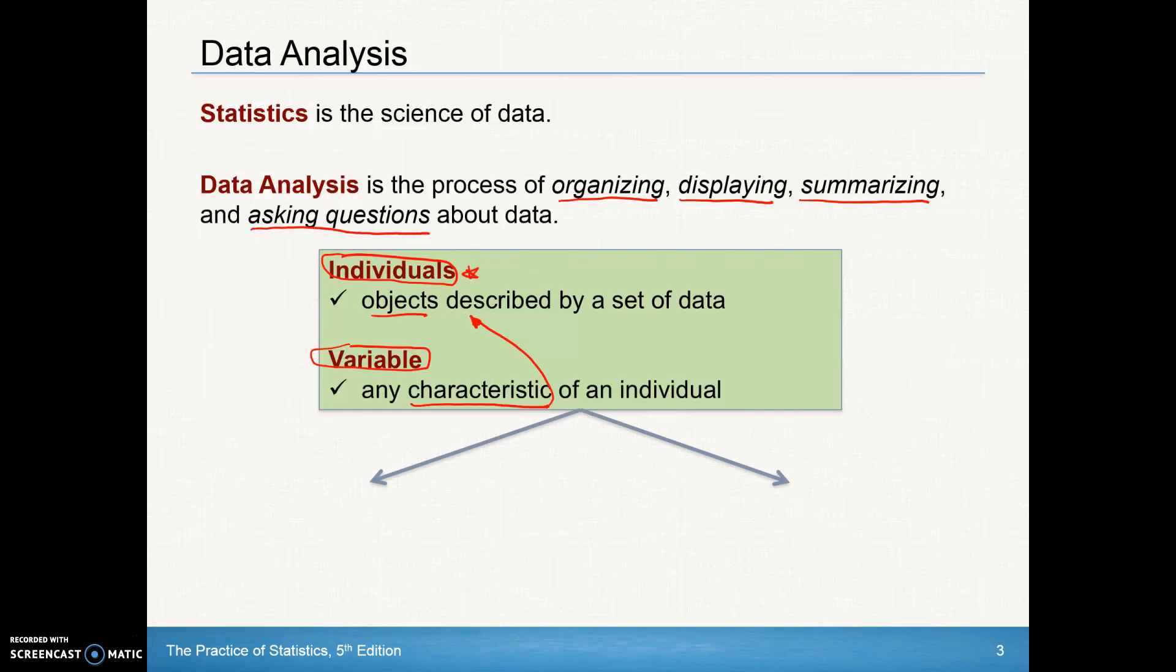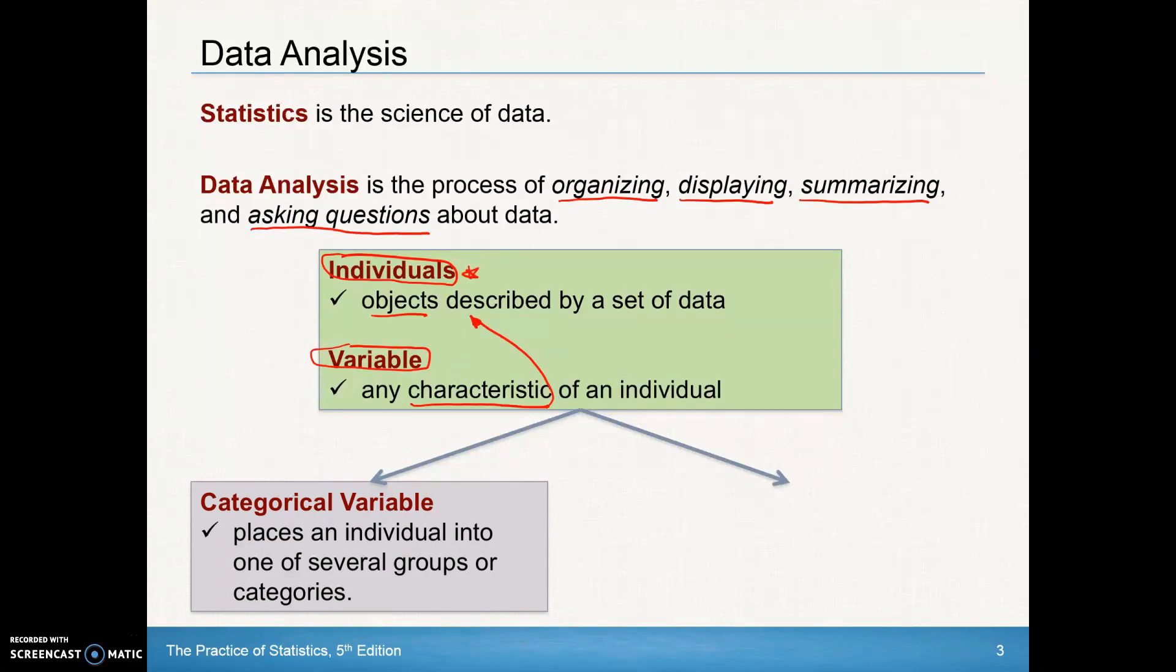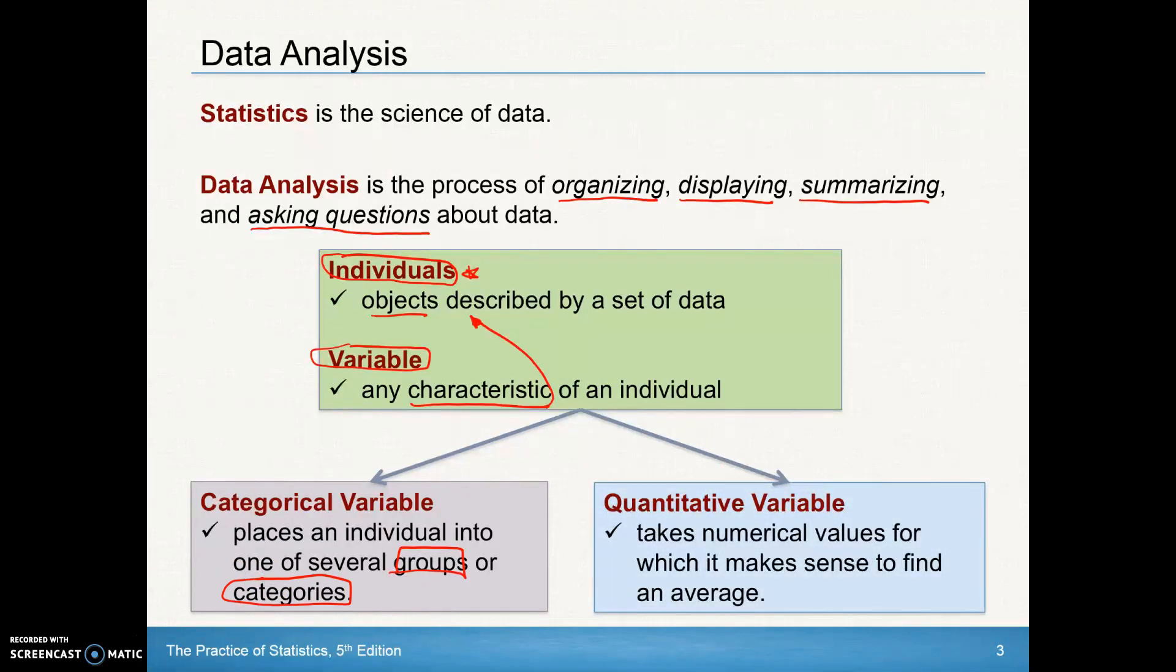Variables can be categorized into two different areas. Categorical variables place an individual into one or several groups or categories. Quantitative variables take on numerical values. Hair color - blonde, brunette, gray, silver, no hair - those would be categorical variables because they place into groups or categories. There's no numerical values for those. Where if I'm collecting the variable on height, those are numerical values. It makes sense to find an average. I could add up all the heights of all the students, divide by how many we have, and find the mean height.